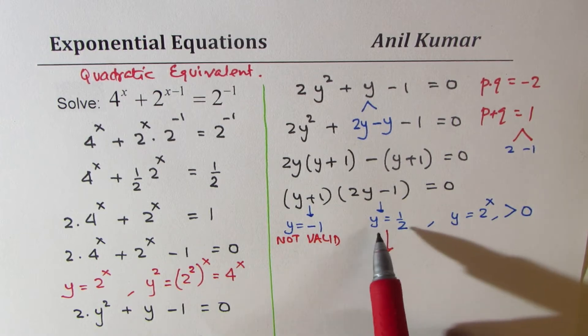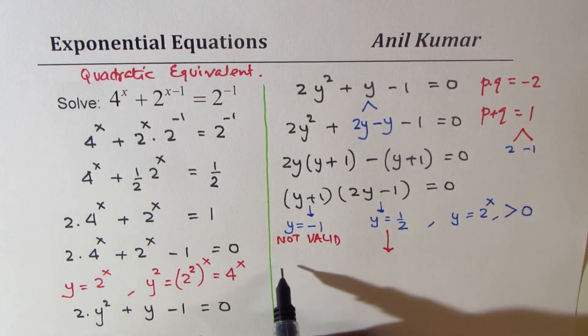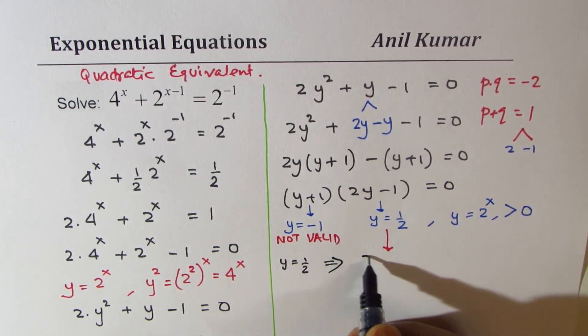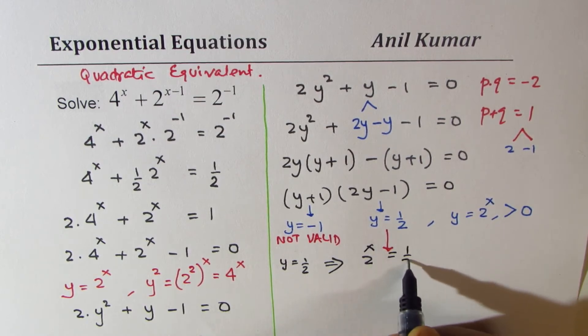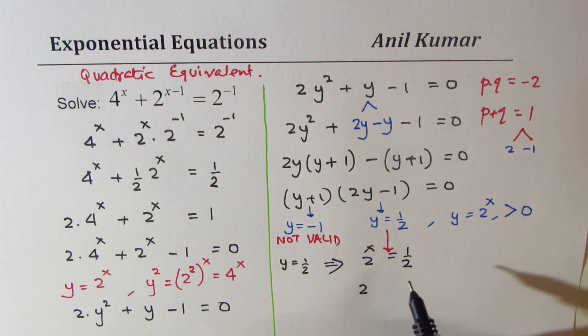However, this is OK. So we'll solve further with y equals half. So for y equals half, it gives us that 2 to the power of x equals half. And that means 2 to the power of minus 1.